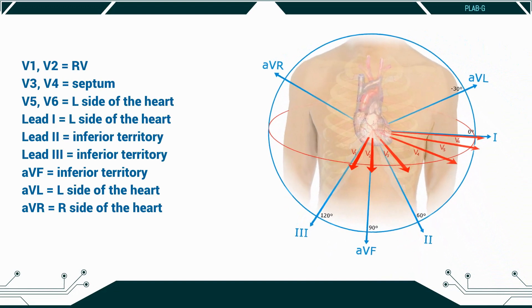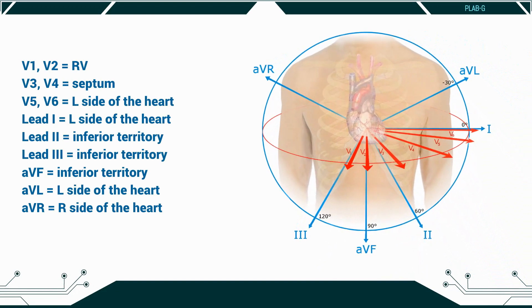In other words, the R and S wave are the same size. This can often be seen in V4. On the ECG, V1 and V2 represent the right ventricle, V3 and V4 the septum, V5, V6 and lead 1 the left side of the heart, lead 2, lead 3 and AVF the inferior territory, AVL again the left side of the heart, and AVR the right side of the heart.